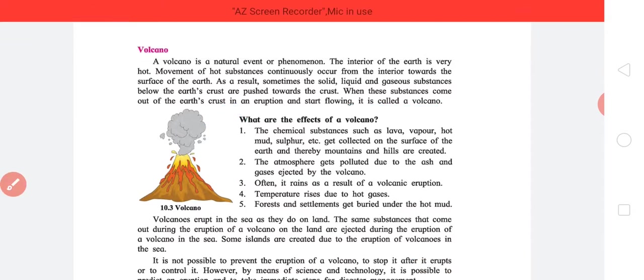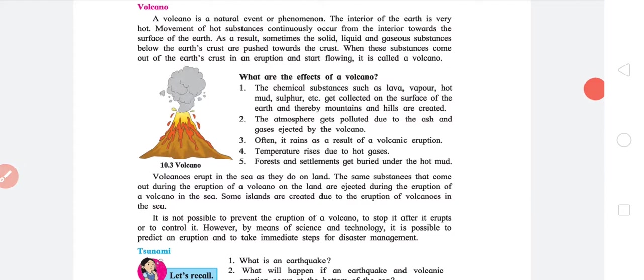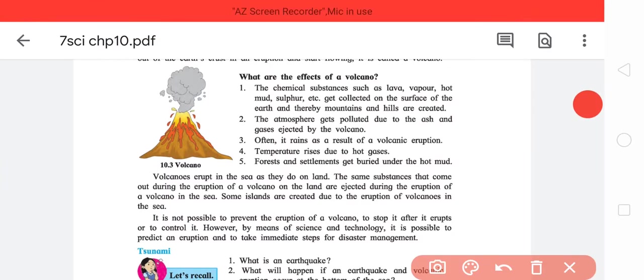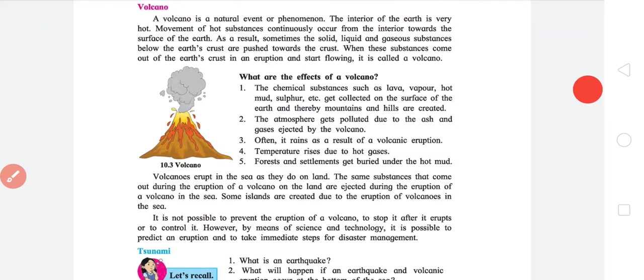What are the effects of a volcano? One, the chemical substances such as lava, vapor, hot mud, sulfur, etc., get collected on the surface of the earth and thereby mountains and hills are created. That is a kind of a good thing because some of the islands we know are volcanic islands. Basically they were formed by a volcanic eruption.